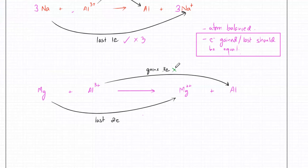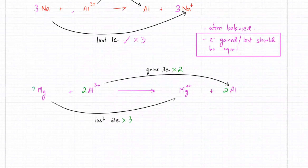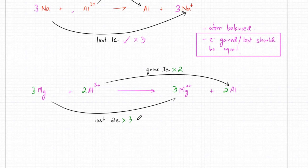What numbers would I multiply each by so that electrons gained and lost become equal? I need to multiply by two and three. I need two aluminiums — so the electrons gained is six — and three Mg's, so the total electrons lost is also six. The number of electrons gained and lost are now equal.